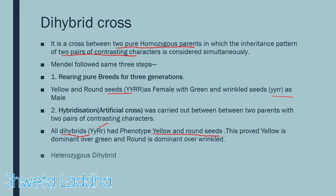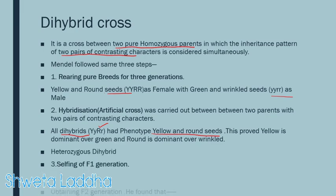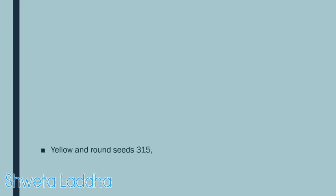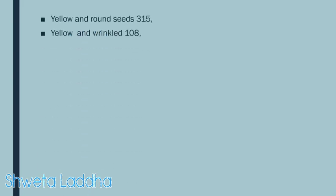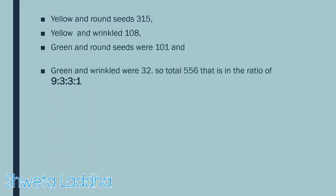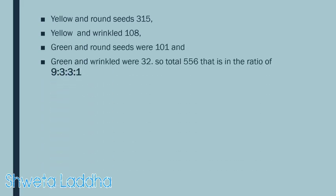Then in the third step, he allowed these heterozygous plants to undergo selfing. In F2 generation, he found that total seeds of yellow and round were 315, yellow and wrinkled were 108, green and round seeds were 101, and green and wrinkled were 32. Total seeds produced were 556 and they were in the ratio of 9:3:3:1.